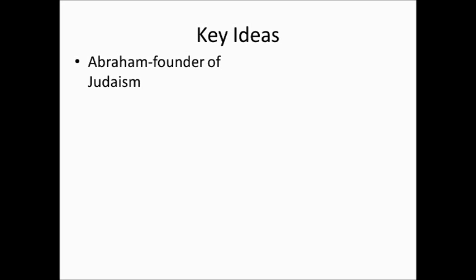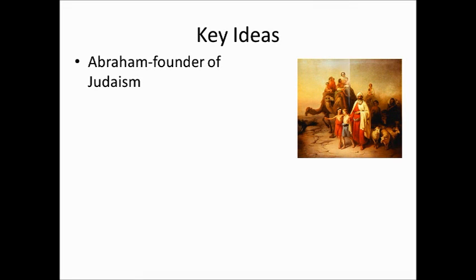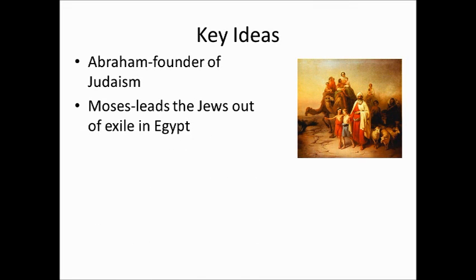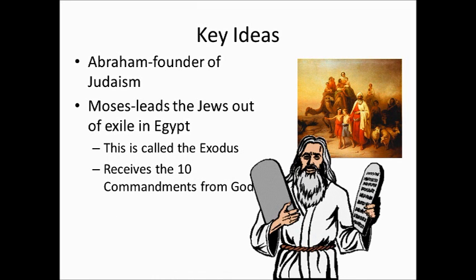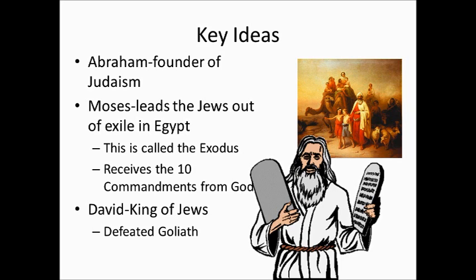Here are some of the key people and ideas of Judaism. Abraham is the founder of Judaism — he was out in a field when the angel Gabriel appeared and told him to move to Canaan, where he will make a great nation. In the Bible's Old Testament, also known as the Torah, Abraham is considered the founder of the religion. Another key figure is Moses, the leader who leads the Jews out of exile in Egypt, where they were enslaved by the Egyptian pharaohs. On their way out, he's given the Ten Commandments by God — the rules they live by. And then there's King David, one of the most famous kings, who defeated the giant Goliath.